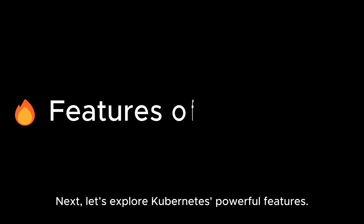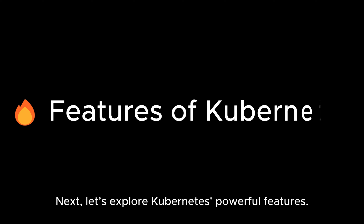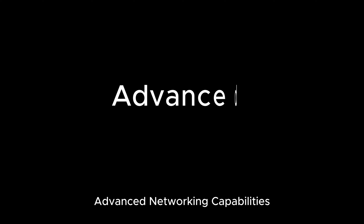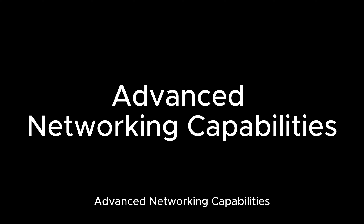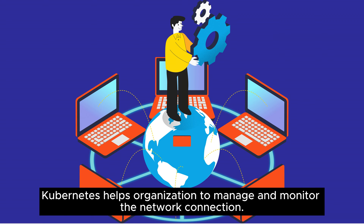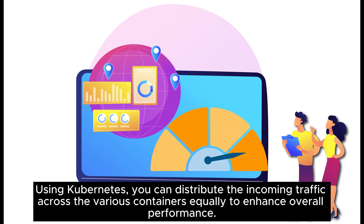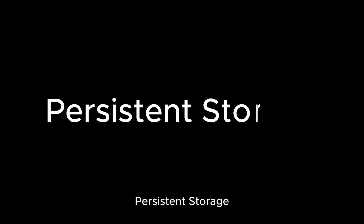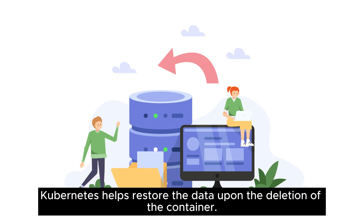Next, let's explore Kubernetes' powerful features. Advanced networking capabilities: Kubernetes helps organizations manage and monitor the network connection. Built-in load balancing: using Kubernetes, you can distribute the incoming traffic across the various containers equally to enhance overall performance. Persistent storage: Kubernetes helps restore the data upon the deletion of the container.